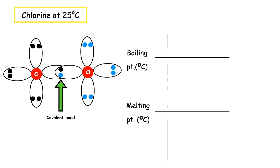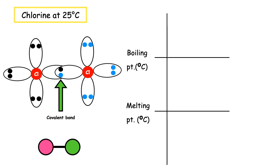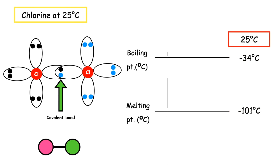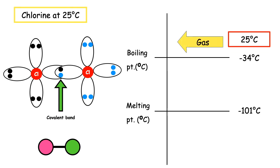The next example is chlorine. It has the same shape — it is a covalent molecular substance with a shared pair of electrons representing the covalent bond. The melting point is minus 101 degrees Celsius and the boiling point is minus 34 degrees Celsius. 25 degrees is a positive number, higher than minus 34, so 25 would go above the boiling point on the scale, which tells us that chlorine is a gas at room temperature.